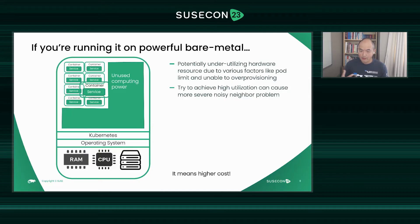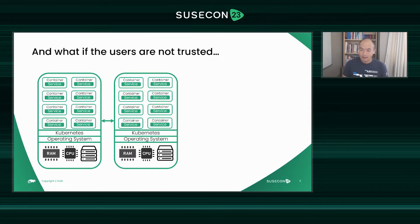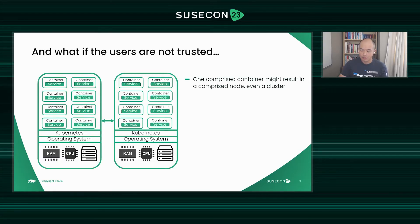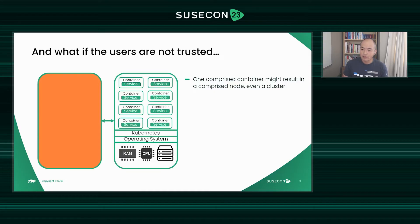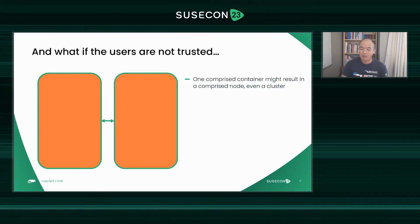Of course, all of this planning and unused compute power means higher cost to operate. The other problem, as I mentioned, is we're assuming the users on the same Kubernetes cluster should be trusted. If only one untrusted user gets in, they will contaminate things. It's very easy to get root access of a node, which will contaminate that node. And if that escalates to the API server, permission escalation can happen very quickly — you might be able to attack the whole cluster.